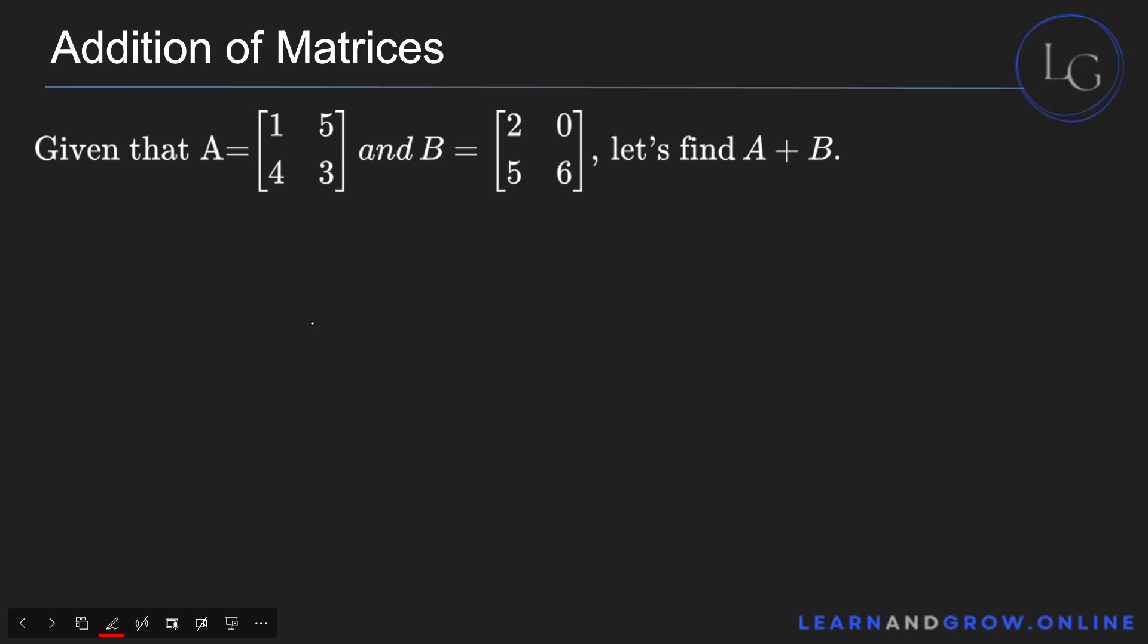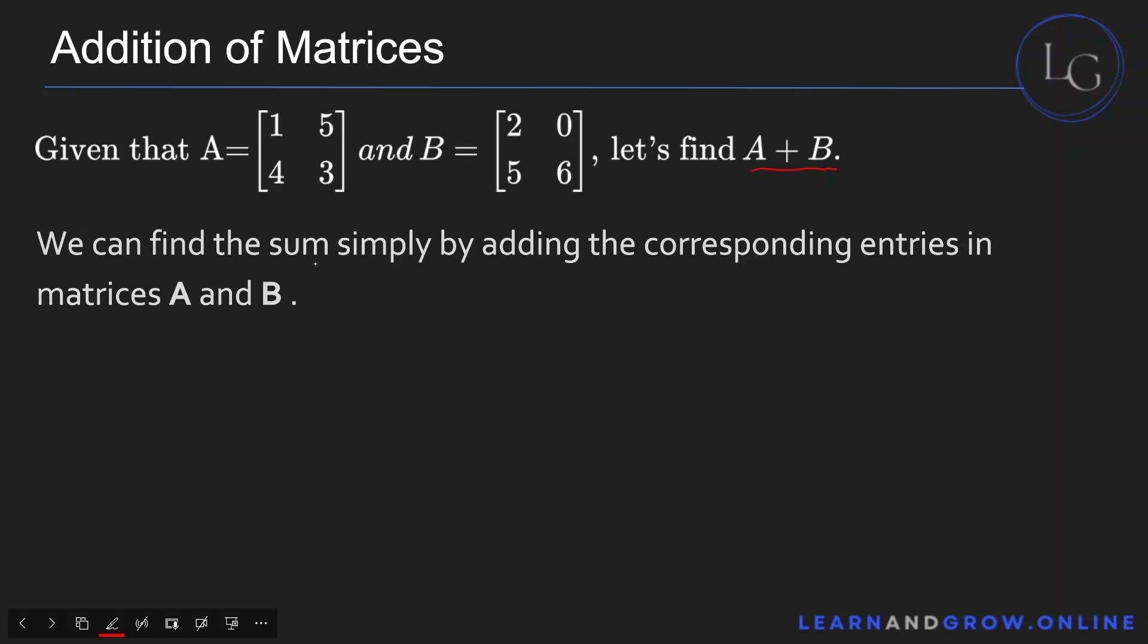Now see the example here. We have to find A plus B. First we must make sure that they have the same order. A is of the order 2 by 2, B is also of the order 2 by 2, so indeed they can be added up. We have to find the sum by adding the corresponding entries.